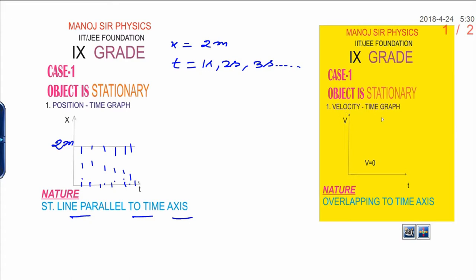Similarly, for the same case, when object is stationary, how do you draw the velocity time graph? You know, velocity is what? That is change in position upon time. Is there change in position? No, there is no change in position. It means change in position is 0 divided by time is changing. It means finally velocity becomes 0. That is why velocity is 0 and nature of the graph is overlapping over the time axis.